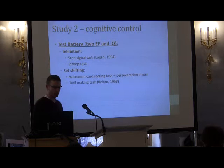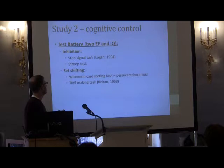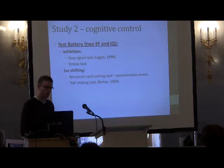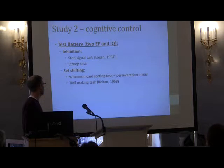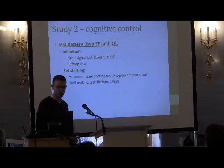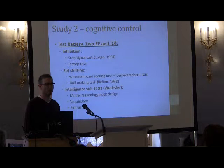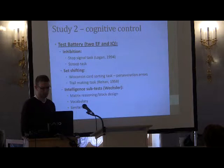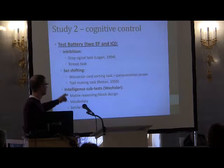In the second study, we created a test battery looking at two executive functions and intelligence. For inhibition, we used the stop signal task and the Stroop task. For set shifting, we used the Wisconsin Card Sorting Task — looking at perseveration errors — and the trail making task. We also used three subtests from the Wechsler Intelligence Scale to assess intelligence. These are pretty standard neuropsychological measures.